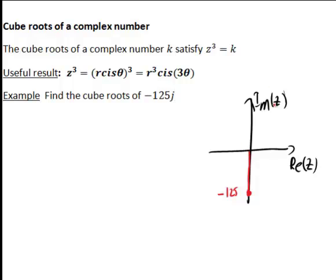The argument of this number, because we're going round clockwise here, not anti-clockwise, that is -90° or -π/2 radians. So therefore, -125j is of the form 125 cis(-π/2).